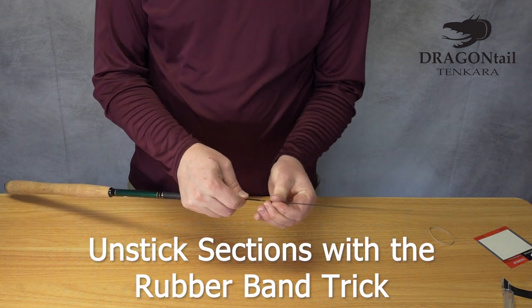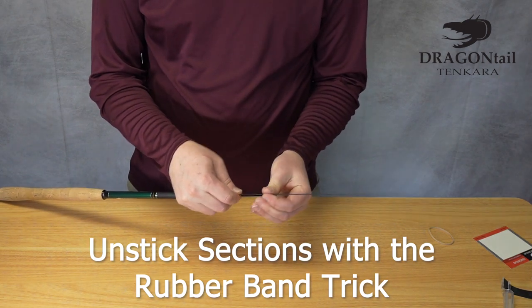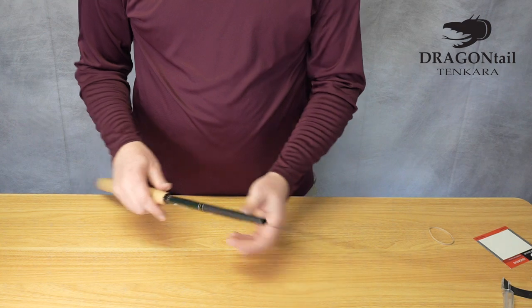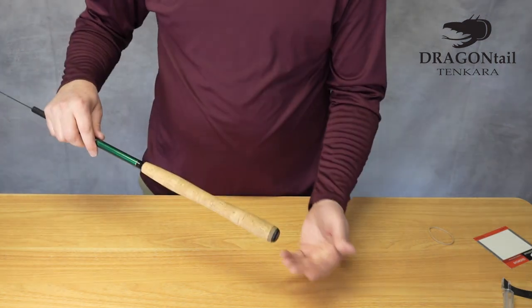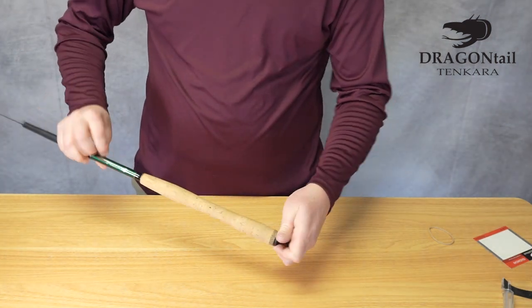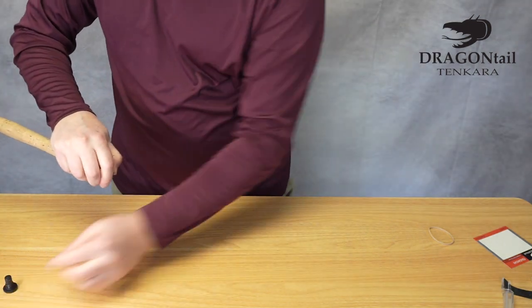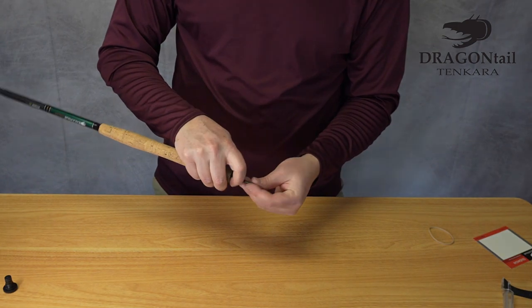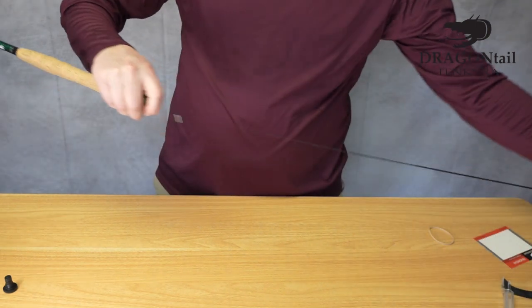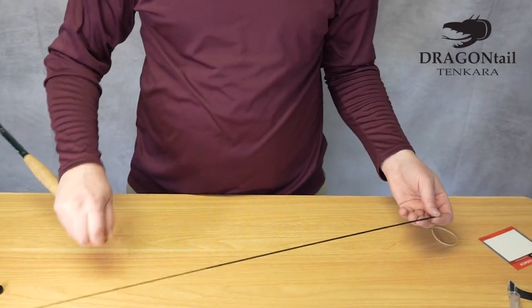To demonstrate this, I pulled this extra tight. If that happens, you can unscrew the butt cap here, take that off, and then just slide out only those parts that are jammed. In this case, the two tip sections.